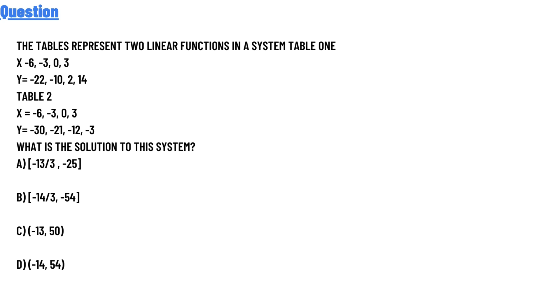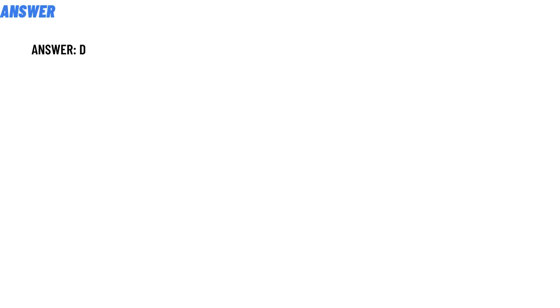The tables represent two linear functions in a system. Table one — the formula is given in the table below. Table two — the formula is given in the table below. What is the solution to the system? The correct answer to the question is answer D.